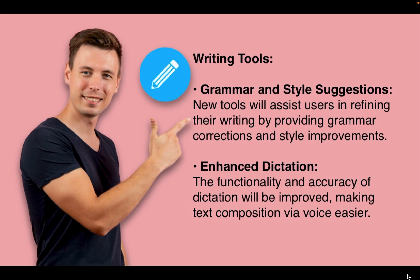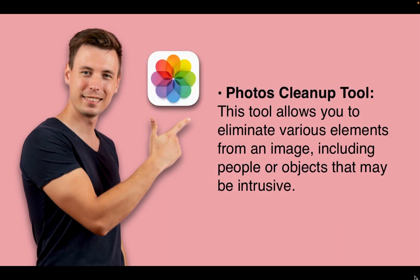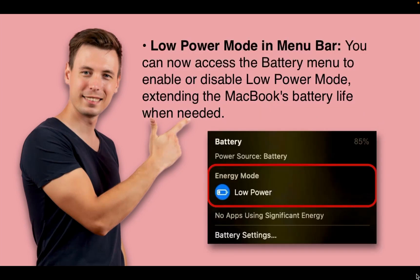Enhanced Dictation: the functionality and accuracy of dictation will be improved, making text composition via voice easier. Photos Cleanup Tool: this tool allows you to eliminate various elements from an image, including people or objects that may be intrusive. Low Power Mode in Menu Bar: you can now access the battery menu to enable or disable low power mode, extending the MacBook's battery life when needed.